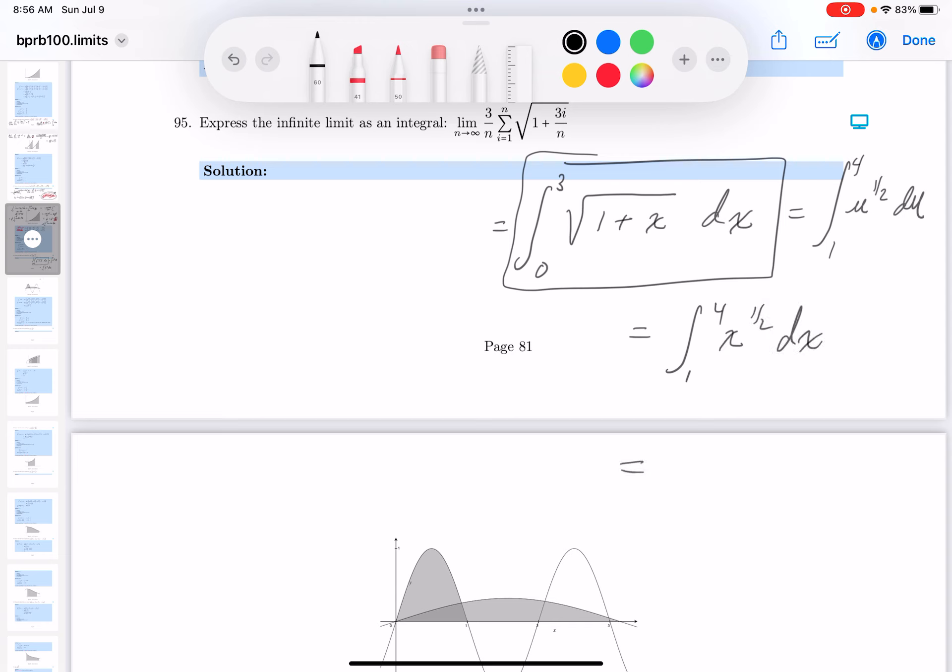All right? Can I integrate that? Yes. Add 1 to the exponent. That's 3 halves. Divide by the exponent, which is 3 halves, or multiply by 2 thirds. This goes from 1 to 4.